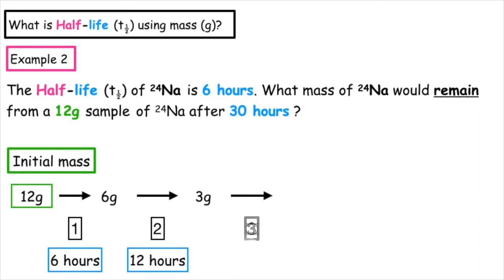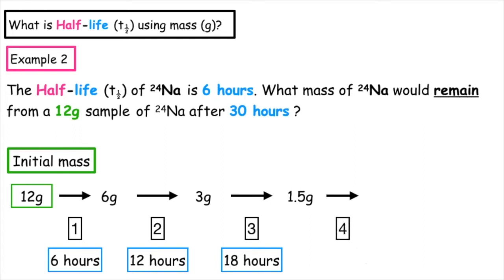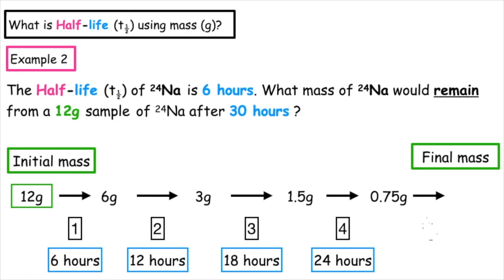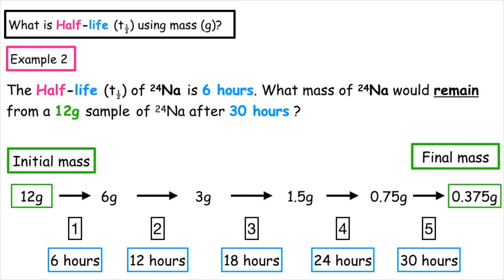After a third half-life, it produces 1.5 grams. A fourth half-life gives us a total of 24 hours and a mass of 0.75 grams. It then undergoes a fifth half-life, giving a total of 30 hours — which is what is given in the question. So the final mass is 0.375 grams.